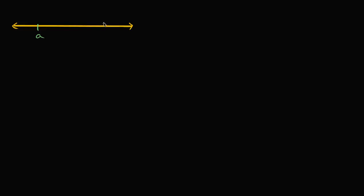Let's say that I have two numbers on a number line. So let me draw a quick number line right over here. The two numbers I care about are the number A and the number represented by B. The way I've drawn it, B is to the right of A on our number line, and by our convention, B is going to be greater than A. So if I wanted to figure out the distance between A and B — this distance going from A to B — how would I figure it out?